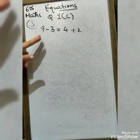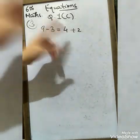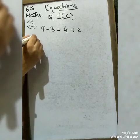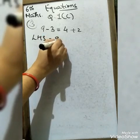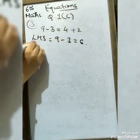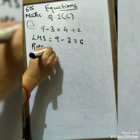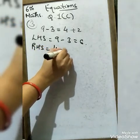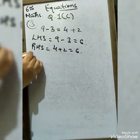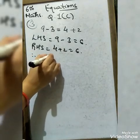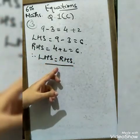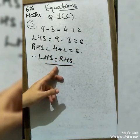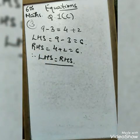The third entry is: 9 minus 3 = 4 plus 2. LHS = 9 − 3 = 6, and RHS = 4 + 2 = 6. Therefore LHS equals RHS. So this is an equality — tick mark for equality, cross mark for equation.